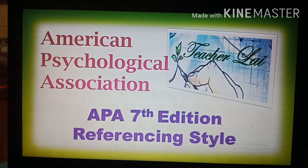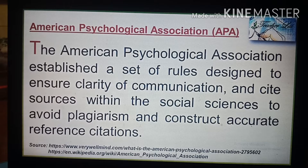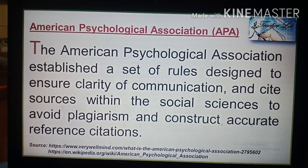Hello everyone, welcome back to our channel. Today our topic is about the American Psychological Association, or APA 7th edition referencing style. The American Psychological Association established a set of rules designed to ensure clarity of communication and cite sources within the social sciences to avoid plagiarism and construct accurate reference citations. All of the APA writing rules can be found in the Publication Manual of the American Psychological Association.